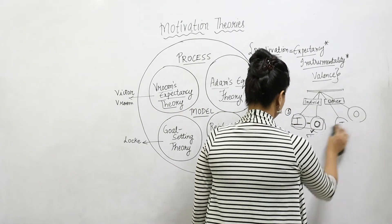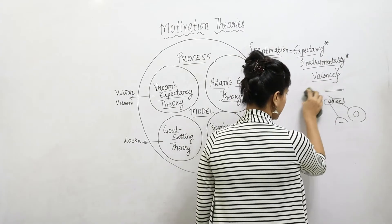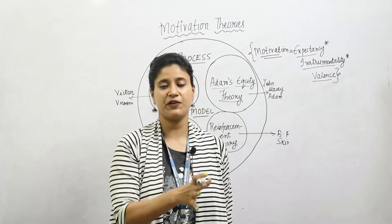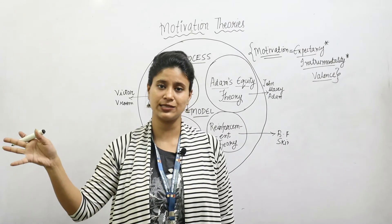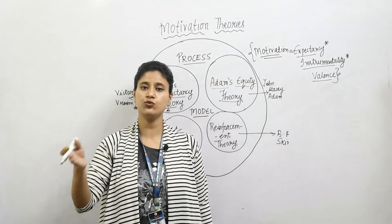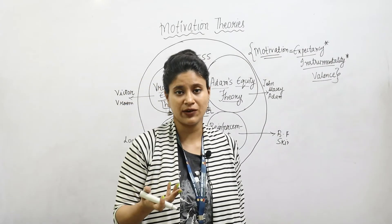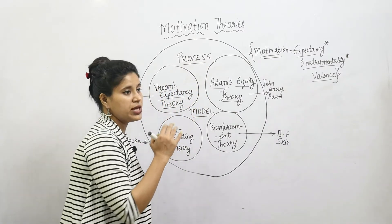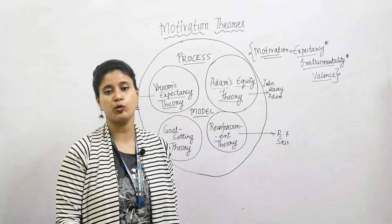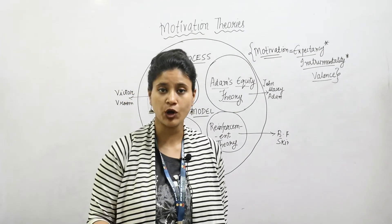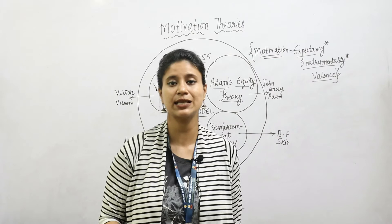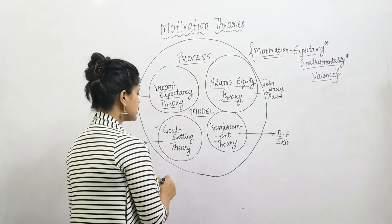Now comes the third theory: Goal Setting Theory, given by Locke. What does it say? Managers have to sit with employees and define how the goals are to be achieved in the organization — planning goals, setting them into objectives, then into policies, rules, and regulations, and looking at how we are going to achieve those goals. If no definite path is defined, it becomes very unorganized. At that point, employees feel dissatisfied. If a participative or democratic approach is not involved, employees feel they are not respected.